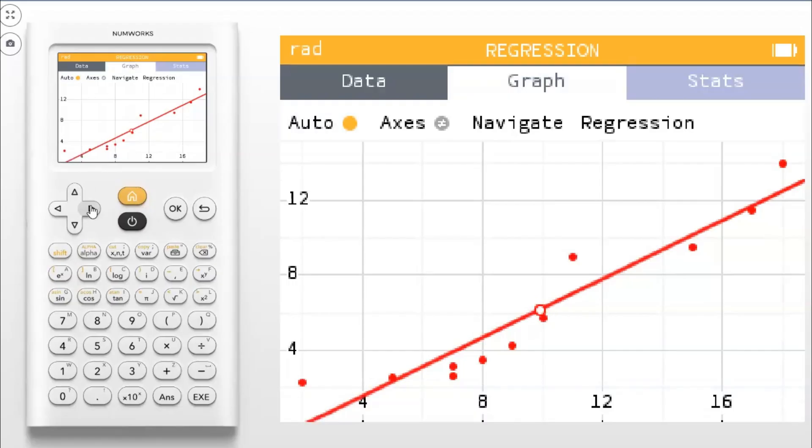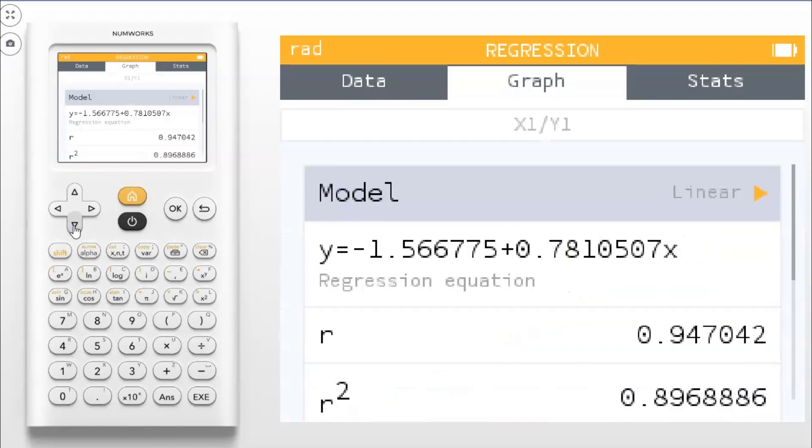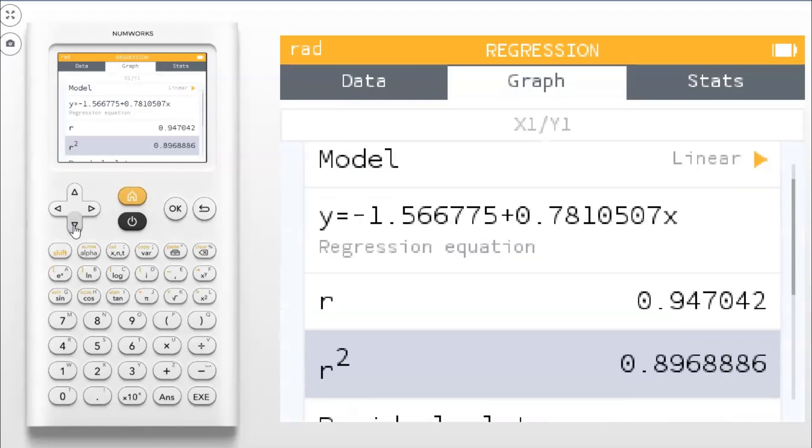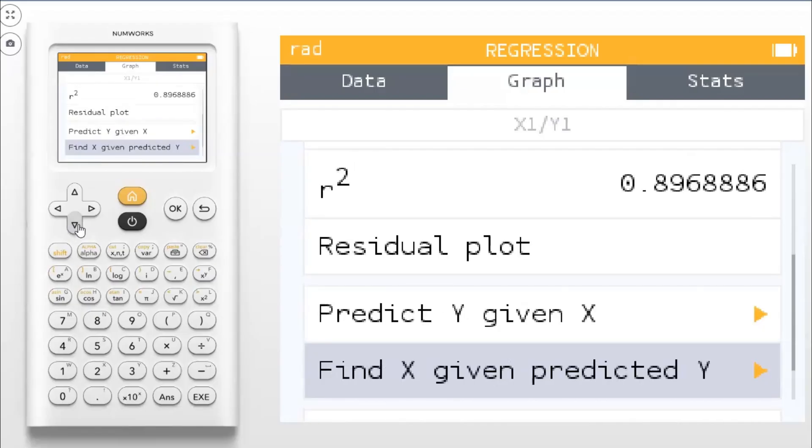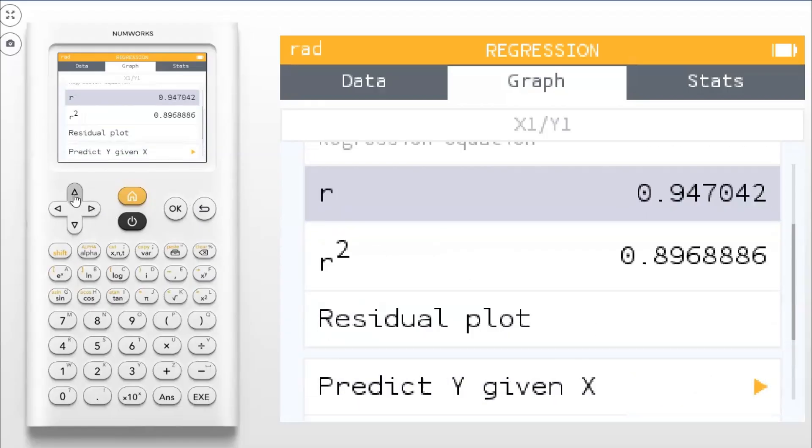And then if you go back to the regression, it'll actually show you the equation of that regression equation. It'll show your R, your R squared. You can create a residual plot. You can predict Y's given X's and you can find X's given Y's. And I know you might not have learned all this yet, so you might not appreciate it all. But trust me, this is huge. This is awesome. And it's so cool how it's very self-explained as well.